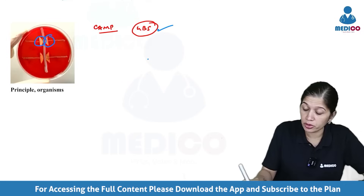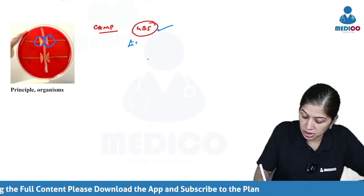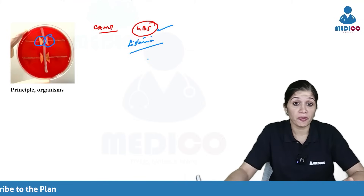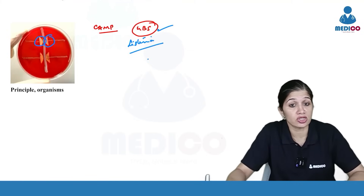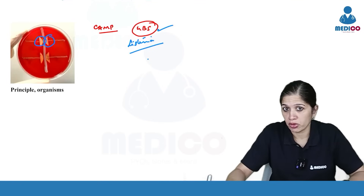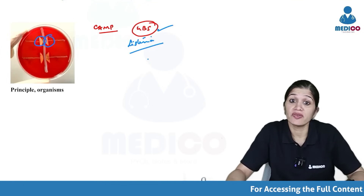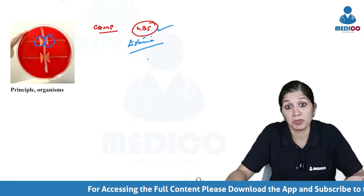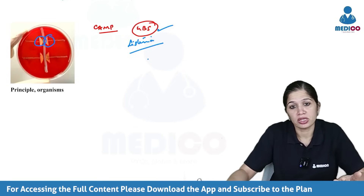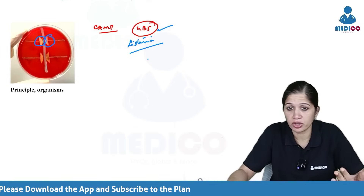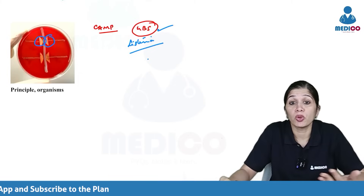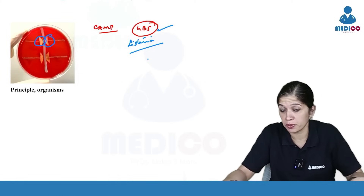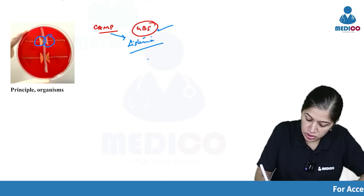CAMP test is not just seen in Group B strep — it is also seen in Listeria. The CAMP test demonstrates the presence of the CAMP factor and is a diagnostic test used for Group B streptococci and Listeria. There is also a reverse CAMP test, using Group B strep and Clostridium perfringens, where the alpha toxin and the CAMP factor produce a bow-tie sort of hemolysis. So reverse CAMP is positive for Clostridium perfringens.